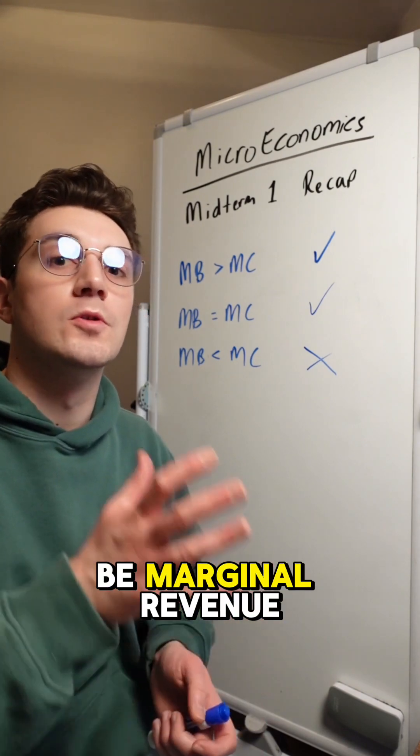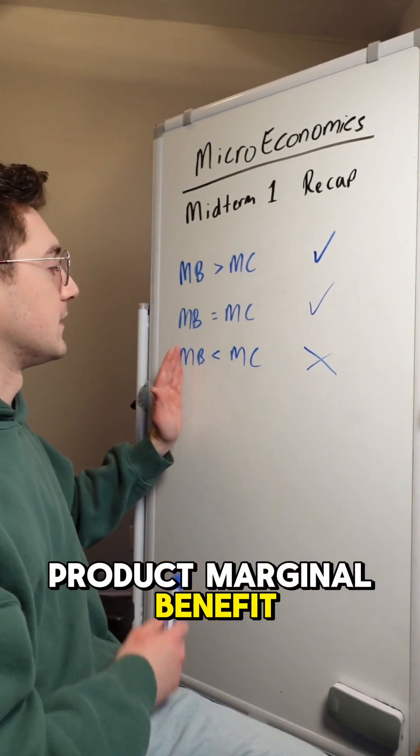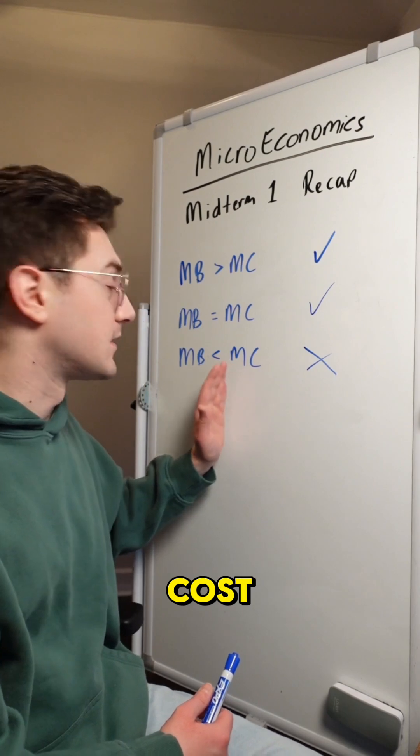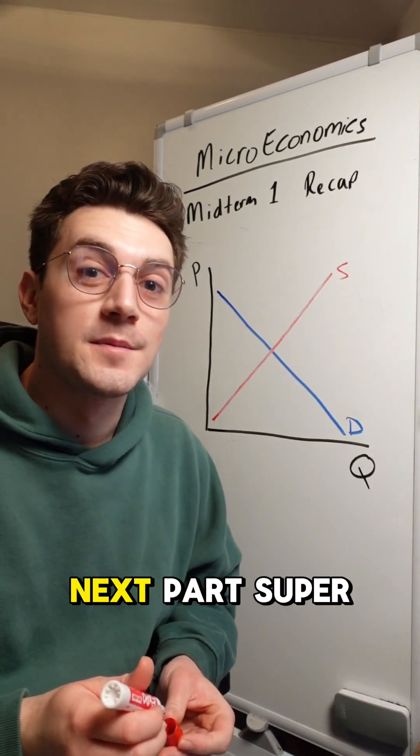Except then it will be marginal revenue product (marginal benefit) and marginal resource cost (marginal cost). I'm going to make this next part super quick.